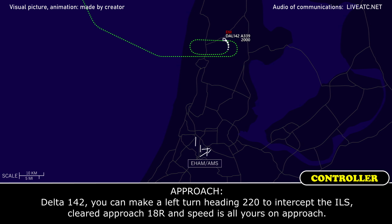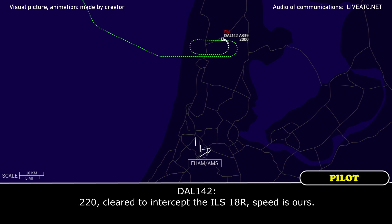Delta 142, you can make a left turn heading 220. Cleared for the ILS approach runway 18R, and speed is all yours. Thank you, sir. Cleared ILS 18R.